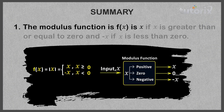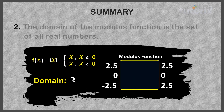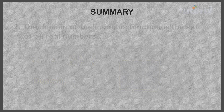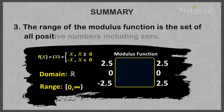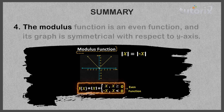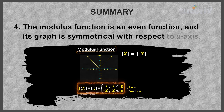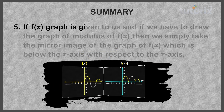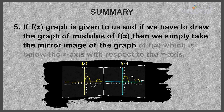Let's summarize what we learned. The modulus function is f(x) = x if x ≥ 0, and f(x) = −x if x < 0. The domain of the modulus function is the set of all real numbers. The range is the set of all non-negative numbers, i.e., [0, ∞). The modulus function is an even function and its graph is symmetrical with respect to the y-axis. To draw the graph of |f(x)|, take the mirror image of the portion of f(x)'s graph that lies below the x-axis, with respect to the x-axis.